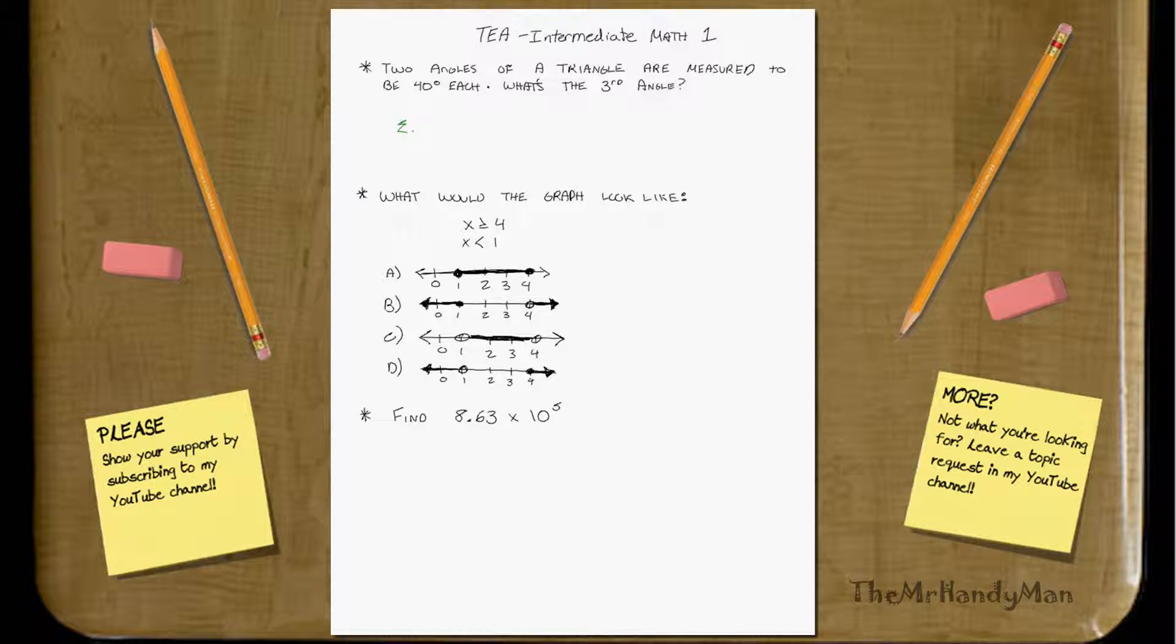First thing that we need to remember is the sum of all the angles in a triangle is equal to 180 degrees. Therefore, that must equal 40 degrees plus 40 degrees plus x degrees.